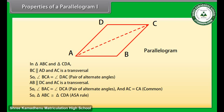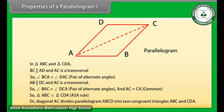So by using the ASA rule, triangle ABC is congruent to triangle CDA. Or we can say that diagonal AC divides parallelogram ABCD into two congruent triangles ABC and CDA.